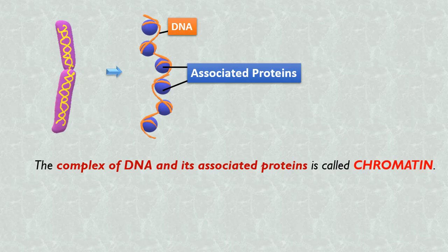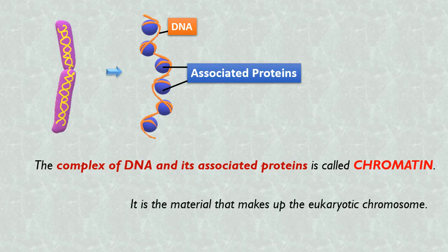The complex of DNA and its associated proteins is known as chromatin. It is the material that makes up the eukaryotic chromosome.